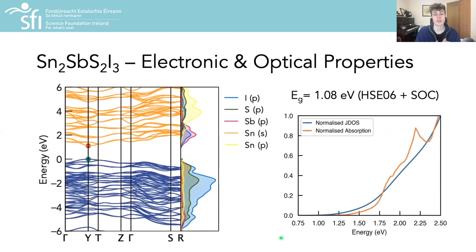We also calculated the electronic structure using hybrid density functional theory including spin-orbit coupling effects to find a direct gap of 1.08 electron volts, which is ideal for photovoltaic operation, with a VBM composed of N and P states and a contribution from the tin 5S² states, and a CBM arising from iodine P and antimony P states.